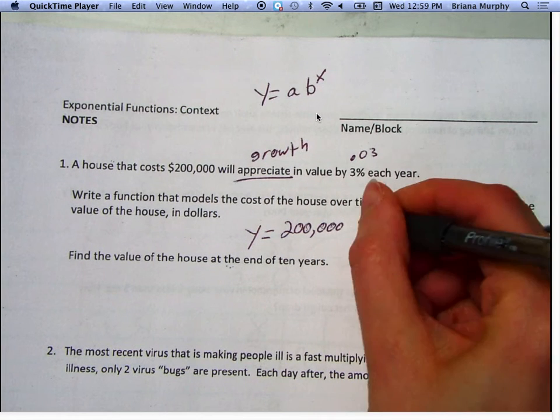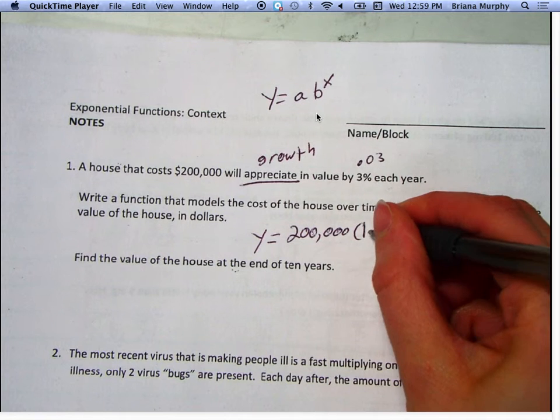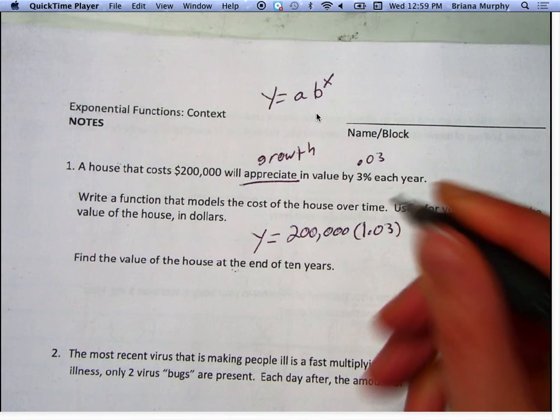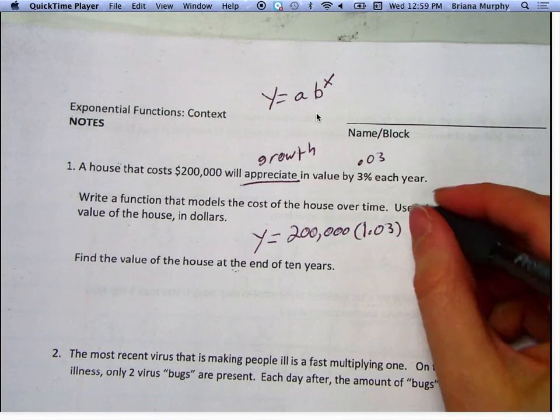What should b be? So b is usually the rate that it changes. What would that be? But that's going to make it a decay and I need it to be a growth. So when we need something to be a growth, but it's not greater than 1, we stick a 1 in front of it. All that does is include the initial price.